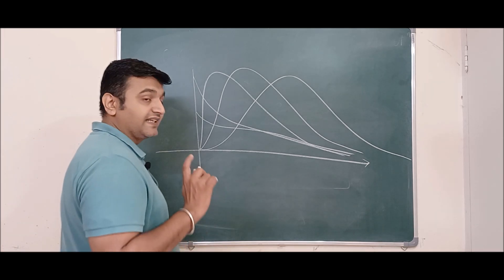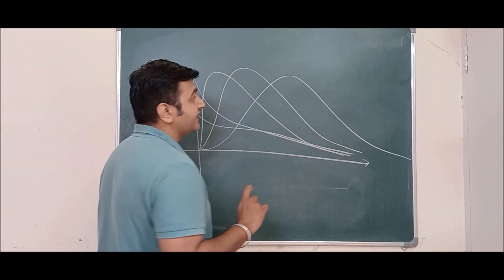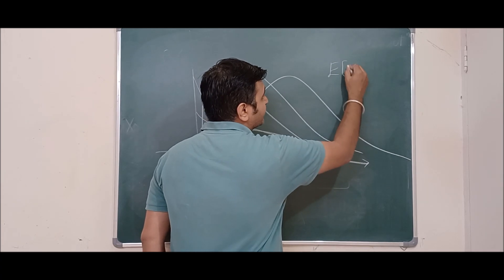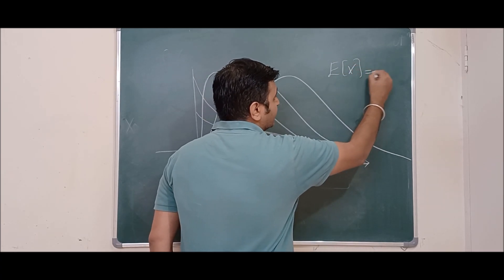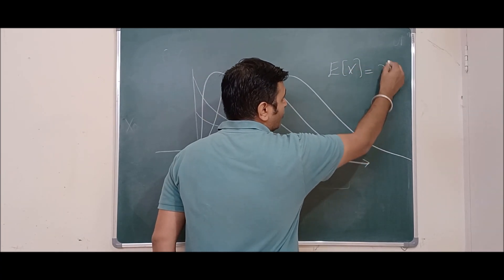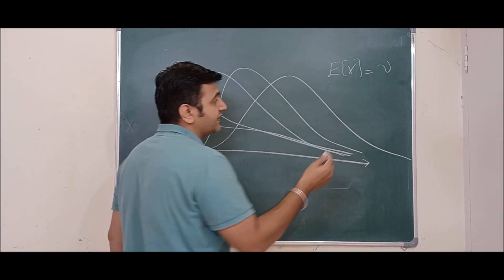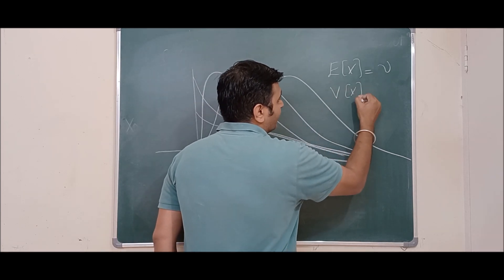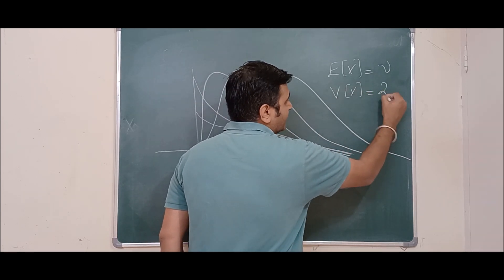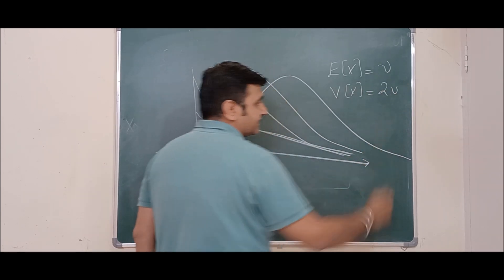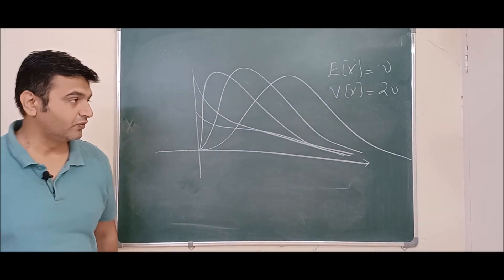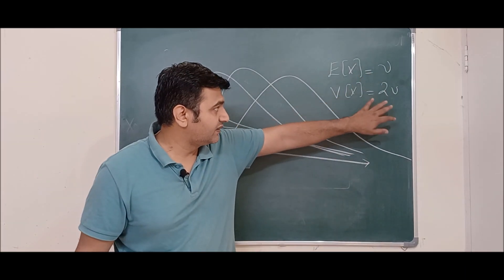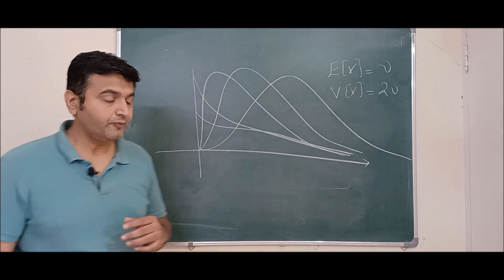Another important fact: the expectation of the chi-square distribution equals nu, the number of degrees of freedom, and the variance of X equals 2 times the degree of freedom. These are standard facts one should know, though we won't prove them here.